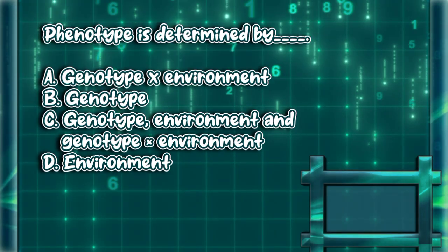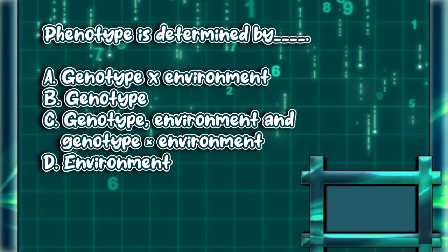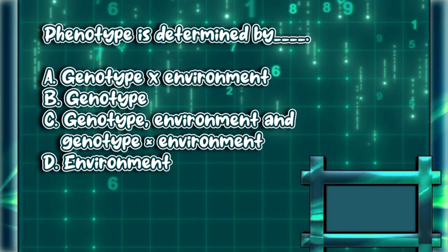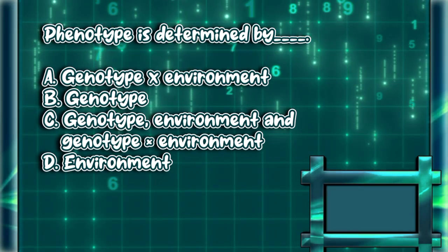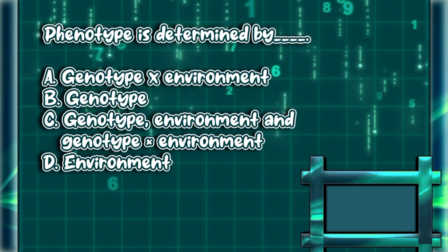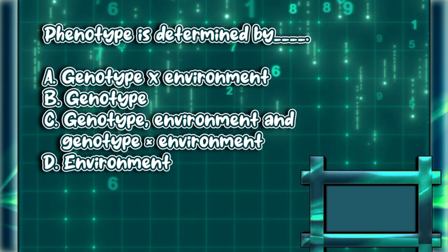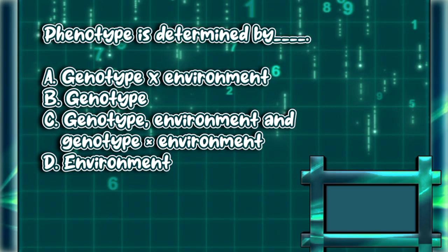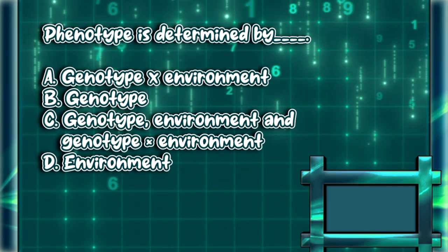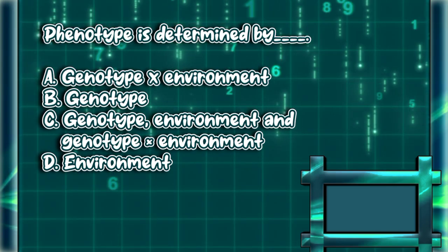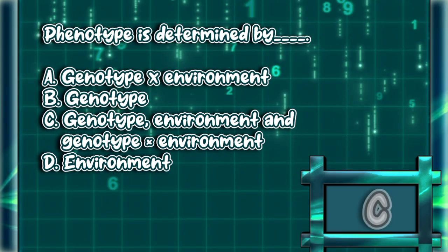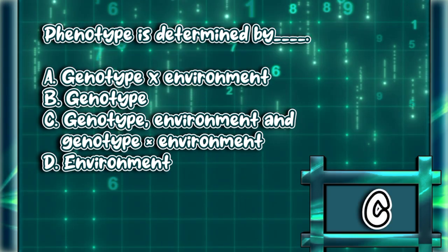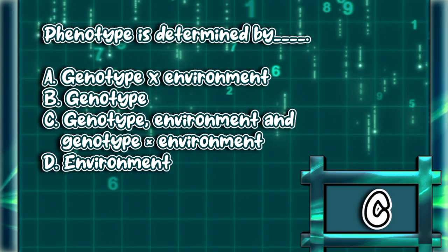Phenotype is determined by. A. Genotype times environment. B. Genotype. C. Genotype, environment, and genotype times environment. D. Environment. The answer is letter C.